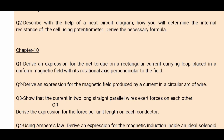The next question: derive an expression for the magnetic field produced by a current in a circular arc of wire. You have to find how much magnetic field is produced at the center due to a circular arc of wire. Using Biot-Savart's law, you derive the formula: B = (μ₀/4π) × (i/r) × θ. The answer is on page 242. If a circular loop is given instead, use θ = 2π to get B = μ₀i/(2r).